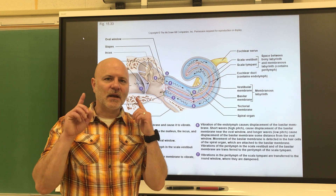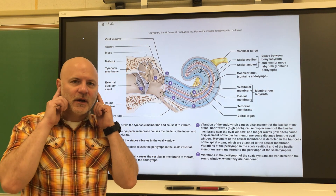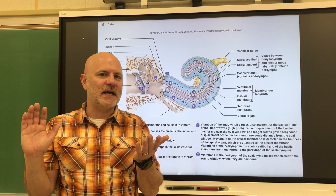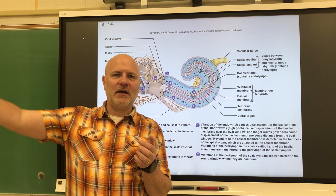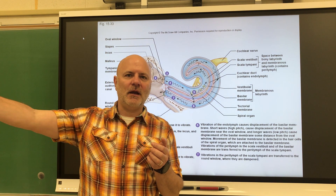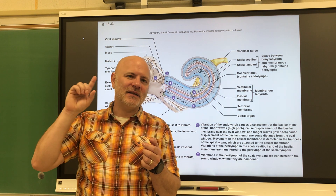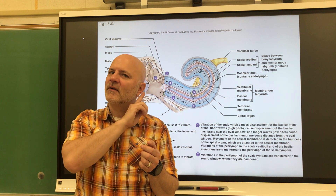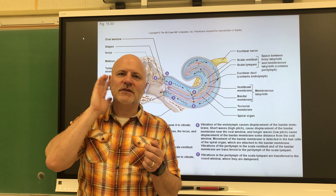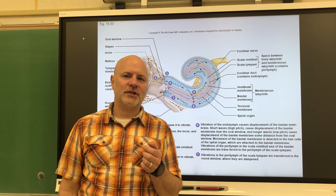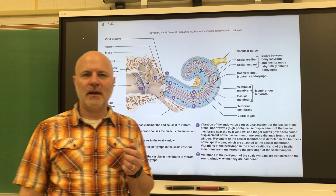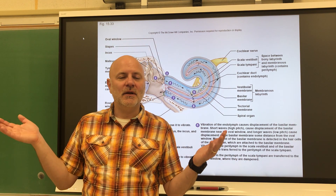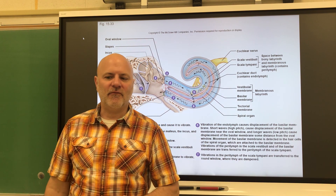Having two ears allows for triangulation, so we know where sounds come from. If a sound comes from one side, it will hit that ear slightly ahead of the other ear, so we know which direction it came from. With only one ear, we wouldn't know which direction a sound came from.